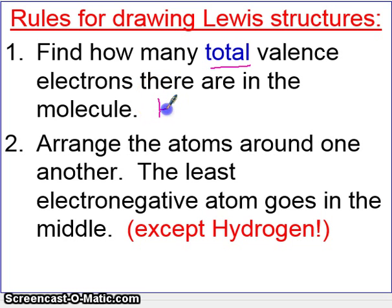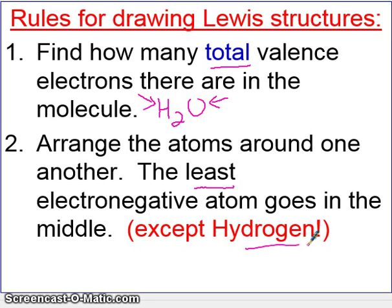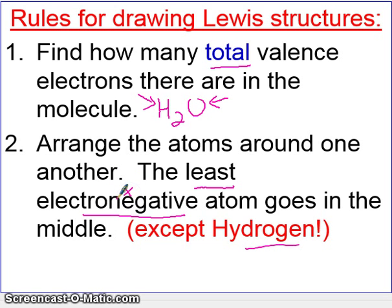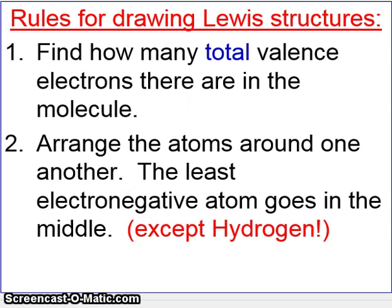Don't worry if the rules seem confusing at first — they will clear up once we do some example problems. The first thing we do is find how many total valence electrons there are in the whole molecule. For example, with water H2O, you'll count the valence electrons from oxygen and from hydrogen and total them up. Then you arrange the atoms: the least electronegative element goes in the middle, except hydrogen, which can never go in the middle because hydrogen can only have two electrons.